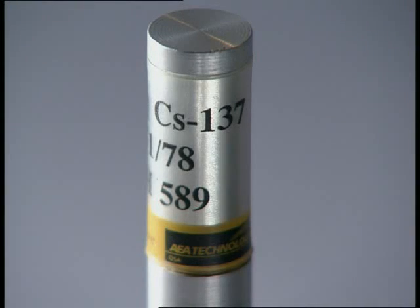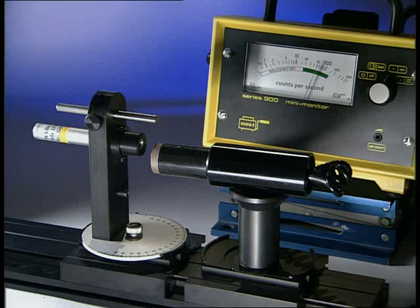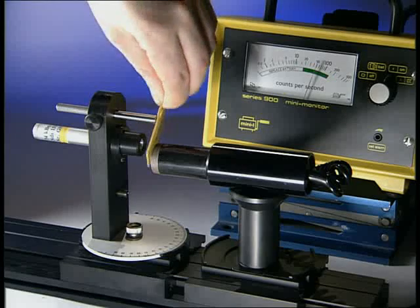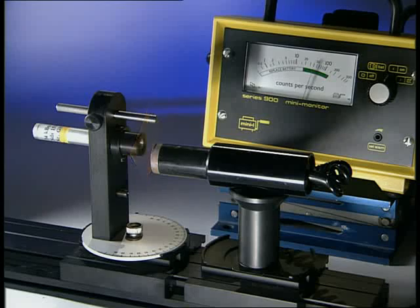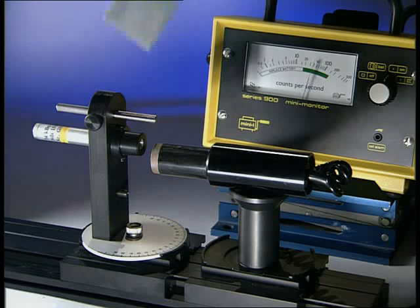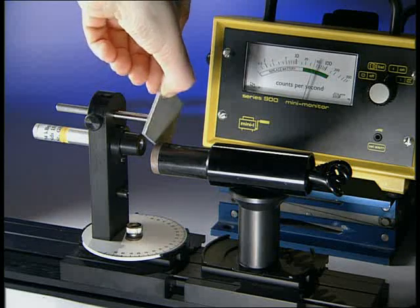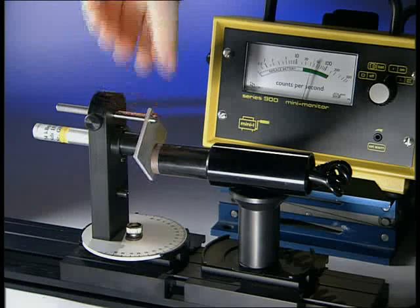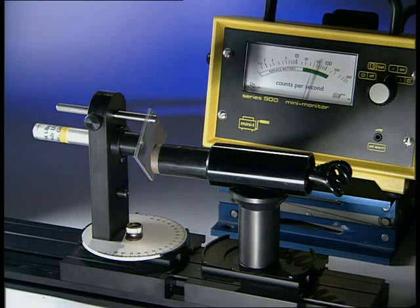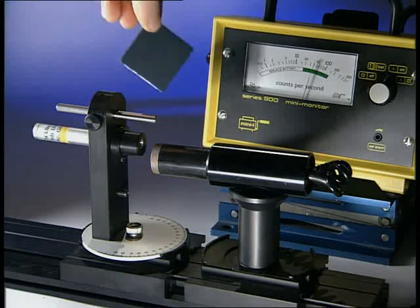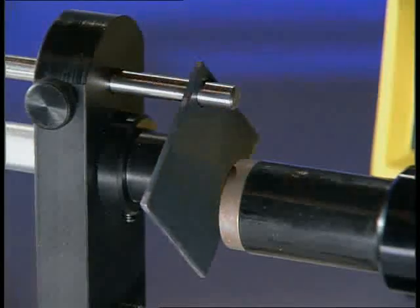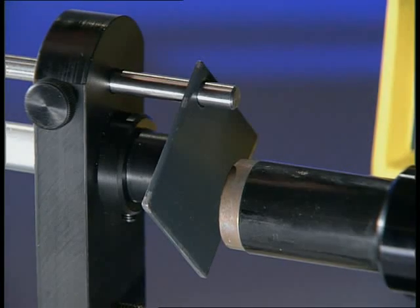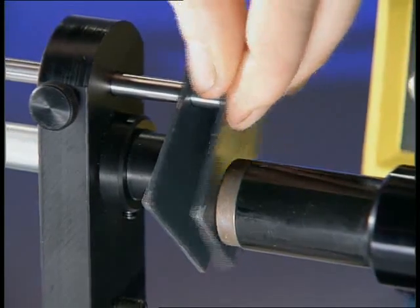Caesium-137 is a source of gamma radiation. At this distance, the count rate is about 50 per second. Place a piece of paper in its way and nothing happens. A thin sheet of aluminium also has no effect. Gamma radiation is very penetrating. Several pieces of lead are needed to absorb this high-energy radiation.